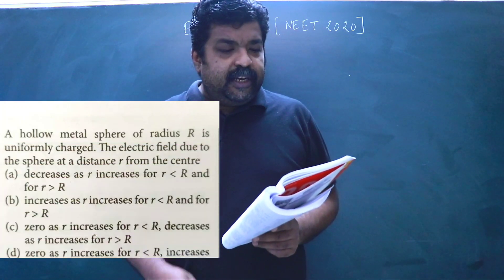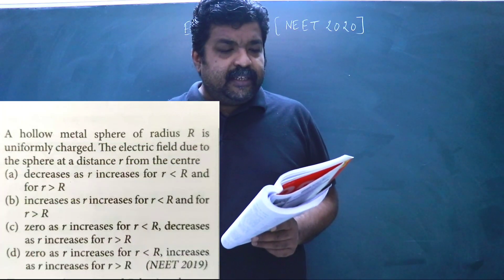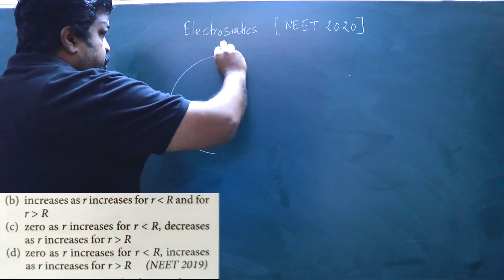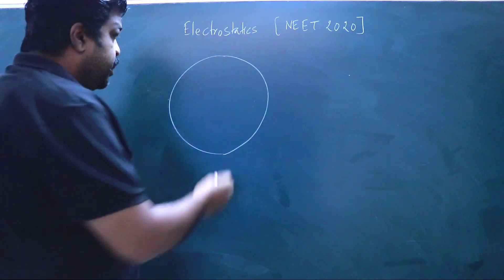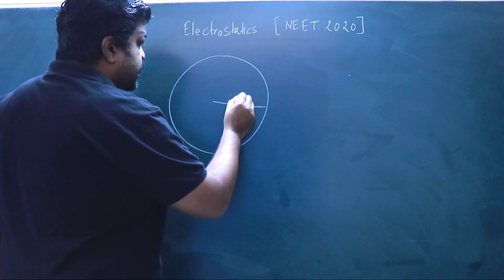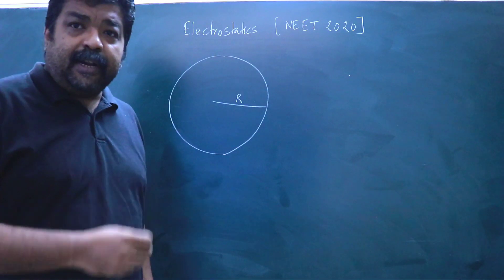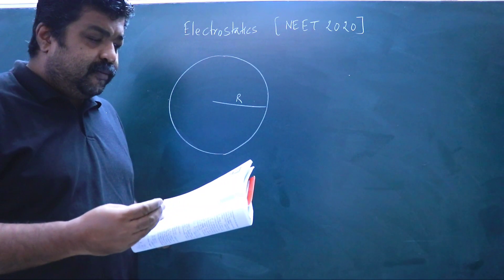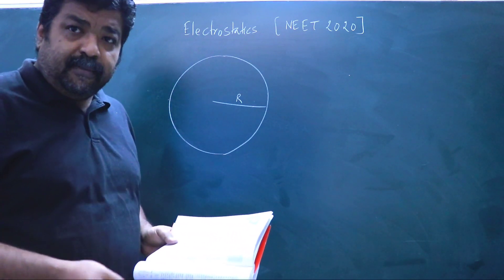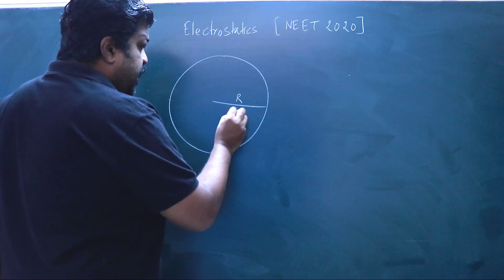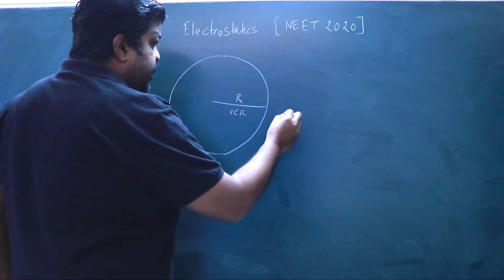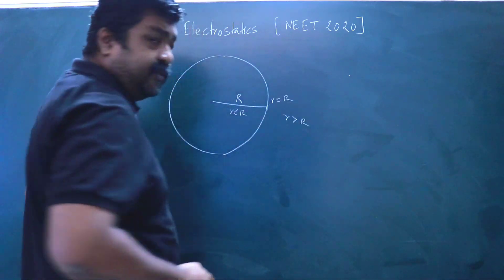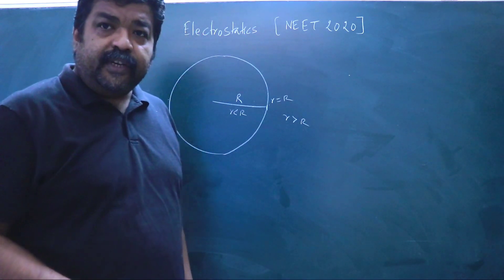The electric field due to the sphere at distance small r from the center is asked. This is a hollow sphere where R is the radius. We need to find how the electric field varies with small r — the variable distance. If you are inside, r is less than R; if you are outside, r is greater than R; if you are on the surface, r is equal to R.